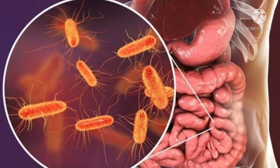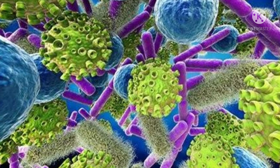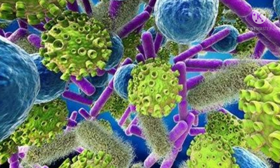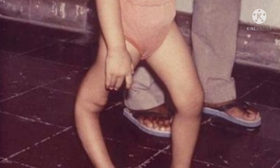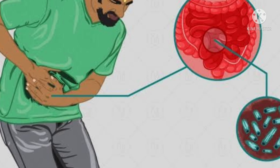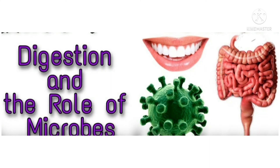Some microbes are used in making bread and buns. Some microbes change milk into curd. Some microbes help in the digestion of food, and some help in the process of rotting dead plants and animals. Harmful microbes that cause diseases are called germs. Some diseases caused by microbes include common cold, influenza, polio, typhoid, tuberculosis, cholera, dysentery, malaria, and ringworm.